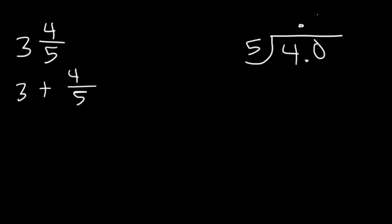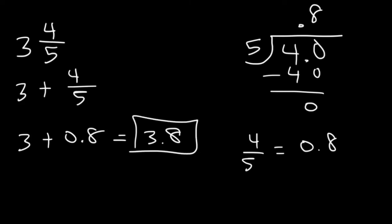5 goes into 40 8 times, with a remainder of 0. So therefore, 4 over 5 is equivalent to 0.8. So 3 and 4 fifths, which is 3 plus 4 over 5, that's 3 plus 0.8. And so this is equal to 3.8. So now you know how to convert a mixed number into a decimal.